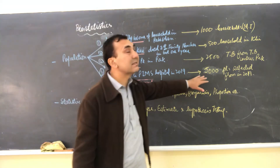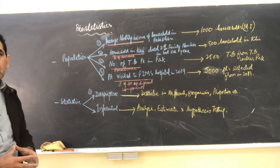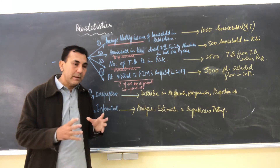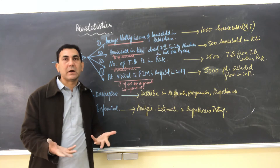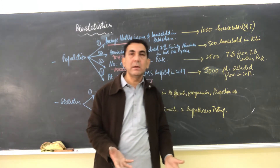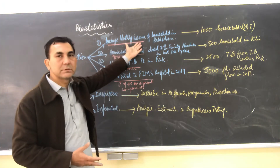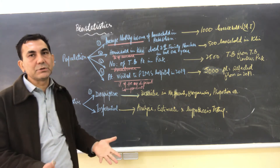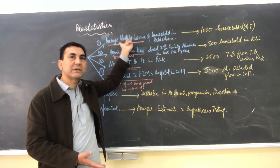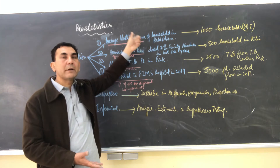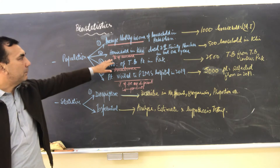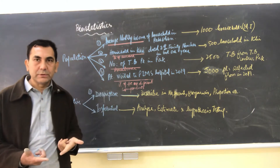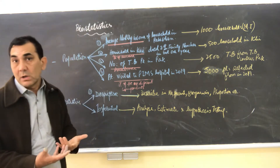As discussed yesterday, a parameter is the measurement of a characteristic of the population. If you measure the characteristic of a sample, it is called a statistic. So the average monthly income measured for all households in Pakistan is a parameter — it measures a characteristic of the entire population. Similarly, the proportion or percentage of households in Karachi in which one family member has died in the last one year is a characteristic measurement of the population, so it is called a parameter.